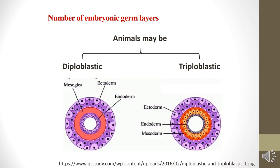During embryonic development, the tissues and organs of animals originate from two or three embryonic germ layers. On the basis of origin and development, animals are classified into two categories: diploblastic and triploblastic. Diploblastic animals have cells arranged into two embryonic layers.